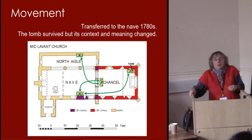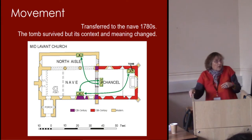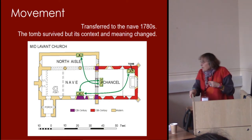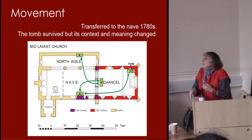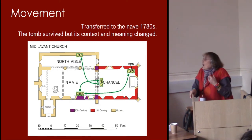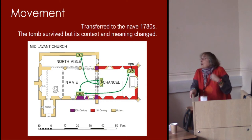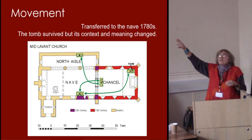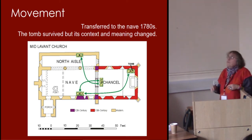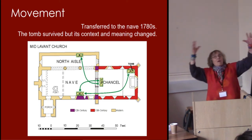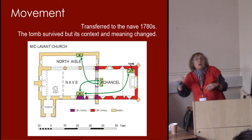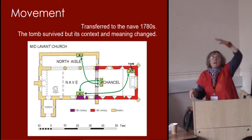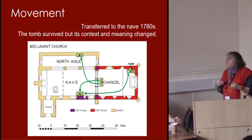So what happened after she initially had this wonderful tomb cited in the northeast corner of the chancel was that after several years, by the late 18th century, the Dukes of Richmond at Goodwood House took over the church as their patrons, and they decided they wanted to move the tomb. It was taking up too much space in the chancel, so they brought it down into the nave and put it up against the south wall. It's a very large tomb — it's got lots of drapery and pilasters and things like that.